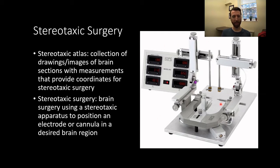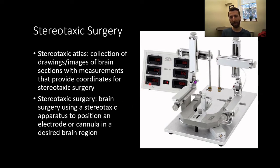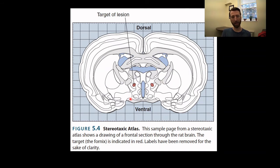Stereotaxic surgery uses a stereotaxic apparatus, which allows us to position a cannula, electrode, or whatever is being implanted within the desired brain region. It's basically a fancy three-dimensional ruler — you secure the animal's head in the apparatus and use arms that move in three dimensions. Fancier versions have automatic measuring tools so you can set a zero point and move the arms relative to that point. Here's an example of a drawn page from a stereotaxic atlas showing the fornix as a target region.